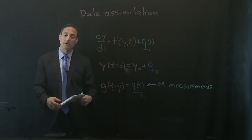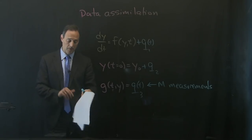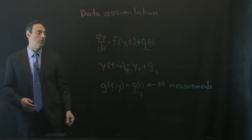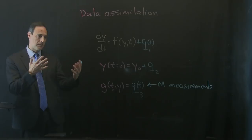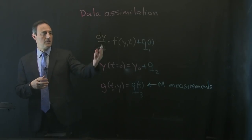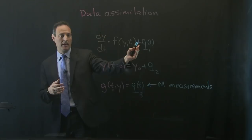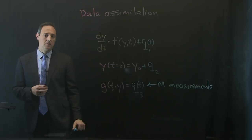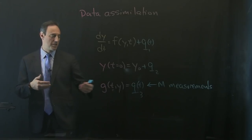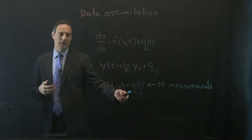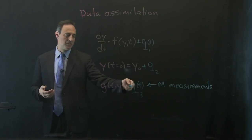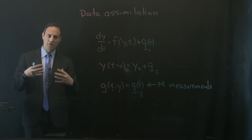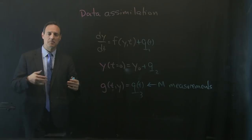The question is how to solve this problem. What data assimilation allows us to do is find a trajectory that minimizes the model error, the initial condition error, and the measurement error - finding the trajectory that satisfies all of these in some optimal way. This means we need to write down an objective function.